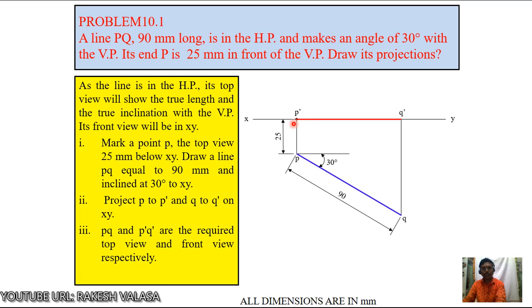So you can construct, you can draw the PQ and P dash Q dash with HB pencil. Remaining all thin lines, so you can use 2H pencil for projector lines and XY line and dimension lines.